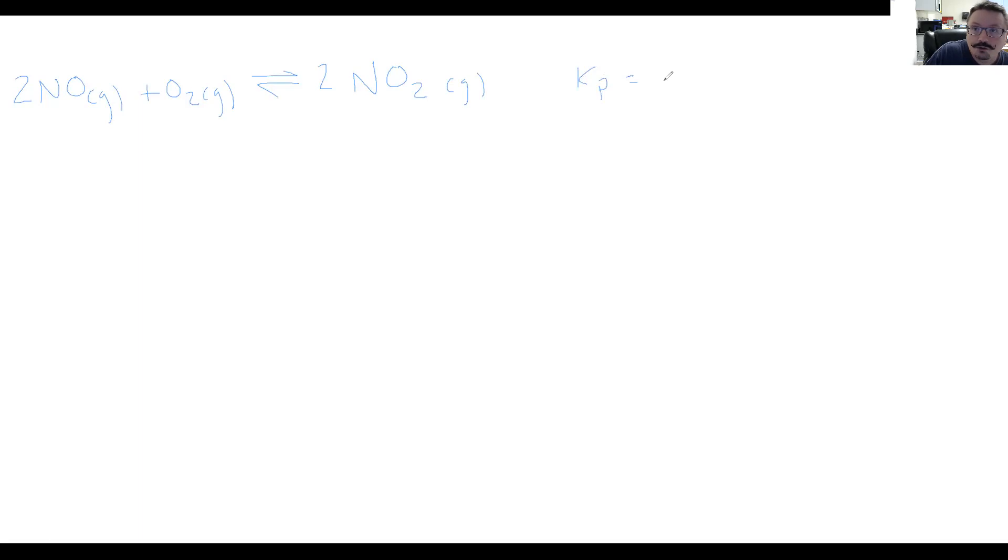And we are told what the K sub P is. It is 2.2 times 10 to the 12 at 25 degrees C. So we have our pressure, we have our specific reaction. This reaction and the stoichiometry is going to be one of the most important parts because we have Kp equaling Kc times RT raised to the delta N. So we're going to find out what that delta N is.